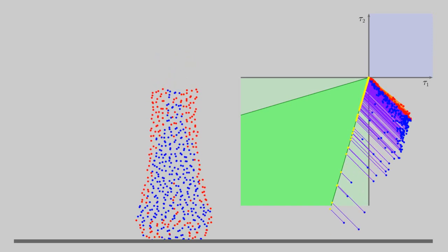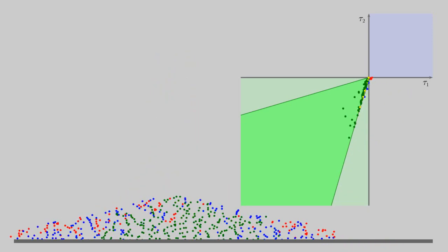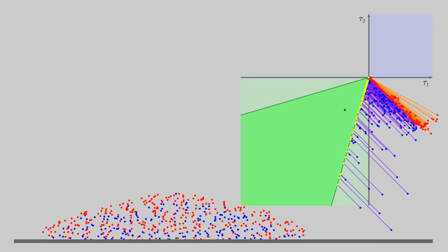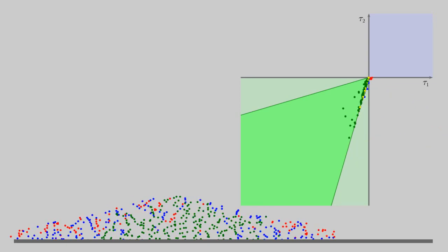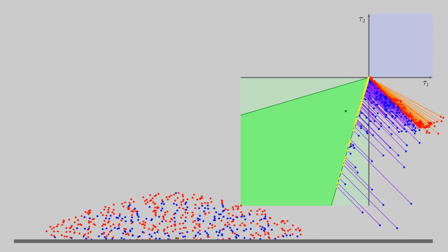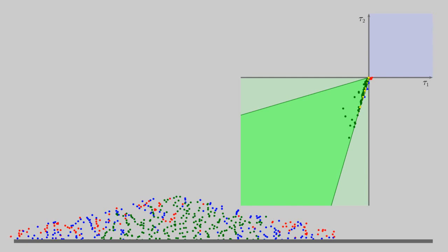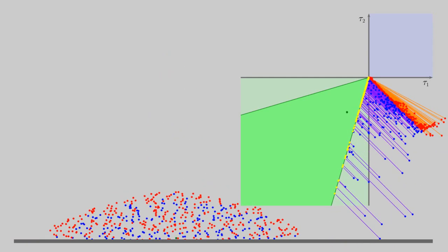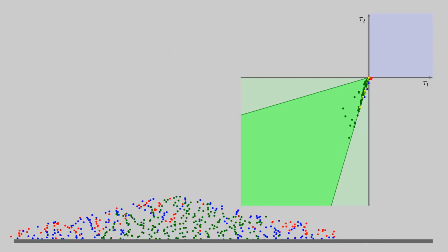The video illustrates the projection process during simulation. Each dot represents a particle. Green particles are within the yield surface and are not projected. Blue particles are projected to the surface of the cone, while red ones are projected to the tip.